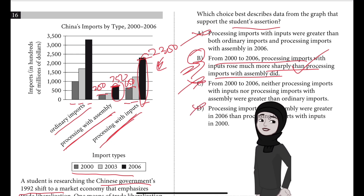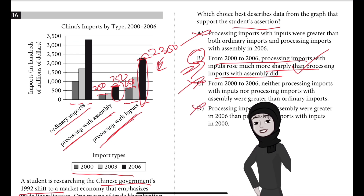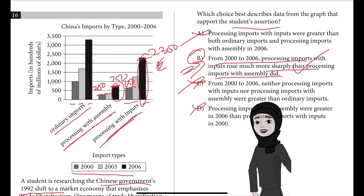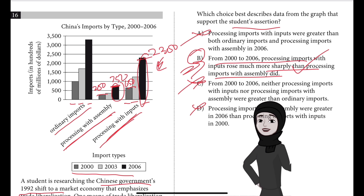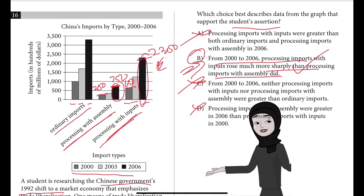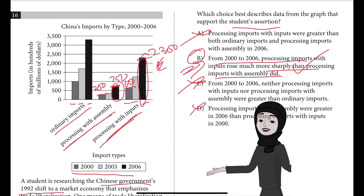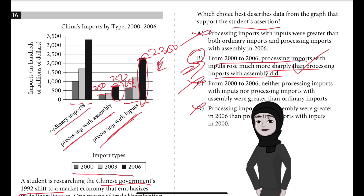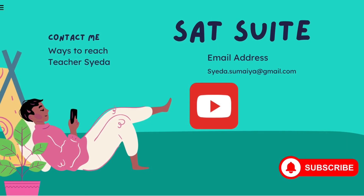Choice D is also incorrect because the fact that processing imports with assembly were greater at the end of the period (2006) than processing imports with inputs were at the start of the period (2000) doesn't address a change within either type of imports during that period. An indication of such a change related to the availability of assets is needed to support the assertion that the situation of having limited capital resolved during the 2000s.